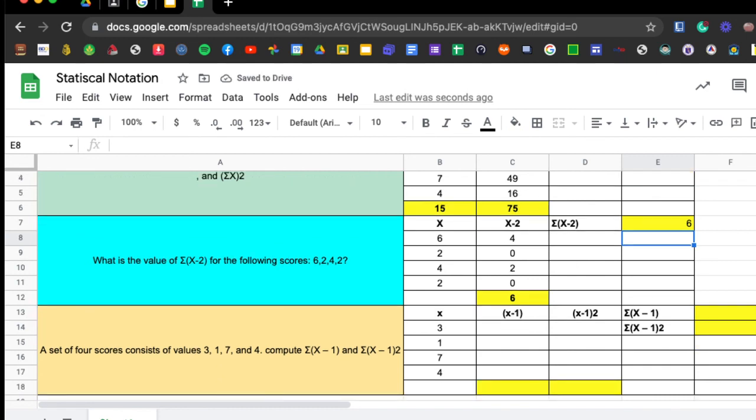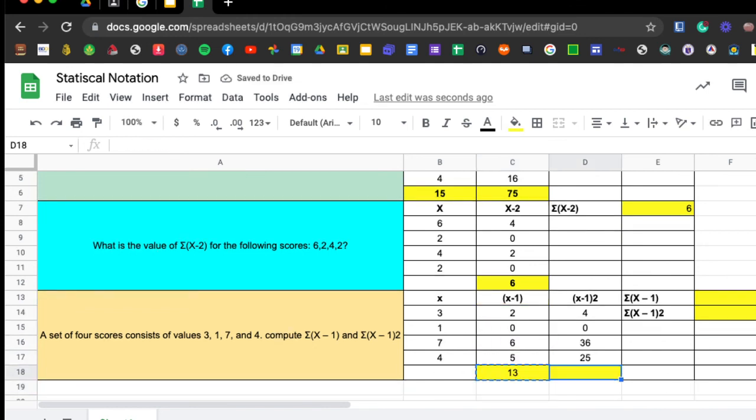Next one. A set of scores consists of values 3, 1, 7, and 4. Now, we're going to compute for X minus 1. Our X is 3, so 3 minus 1 is 2, 1 minus 1 is 0, 7 minus 1 is 6, and 4 minus 1 is 5. Now, X minus 1 squared. We already have the X minus 1 here. We're just going to multiply it by itself because it's squared. So 2 times 2 is 4, 0 times 0 is 0, 6 times 6 is 36, 5 times 5 is 25. So we're just getting the summation of X minus 1. We're going to sum up all these variables. For our X minus 1, our answer is 13. And summation of X minus 1 squared, our answer is 65. So that's it for our statistical notation.